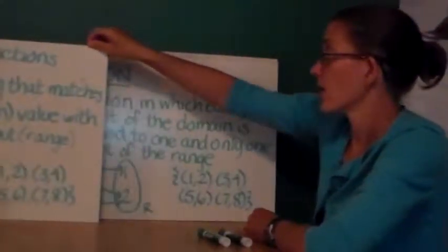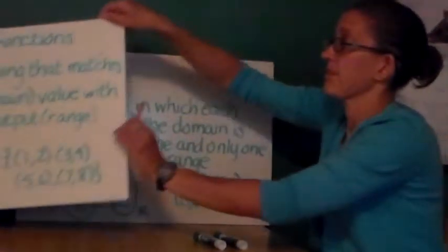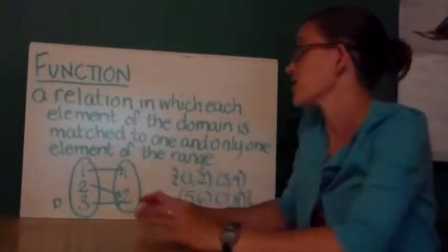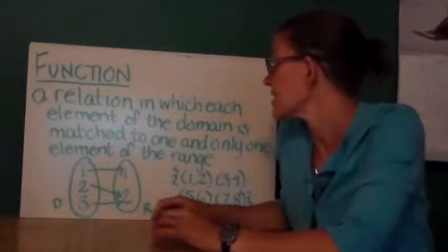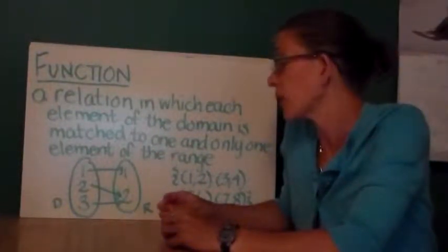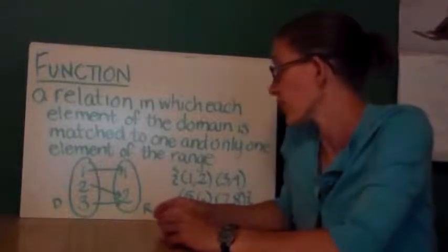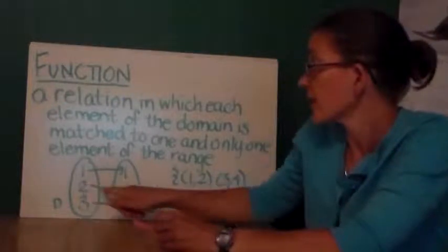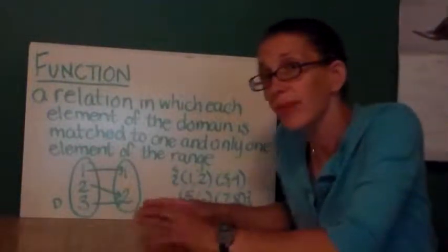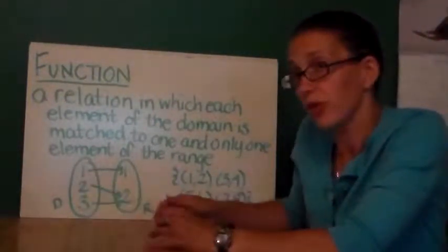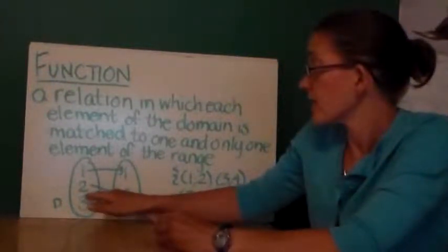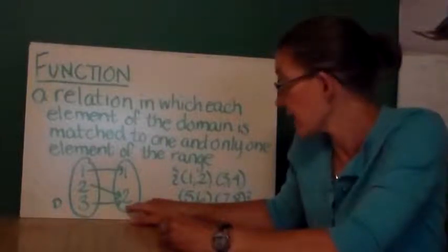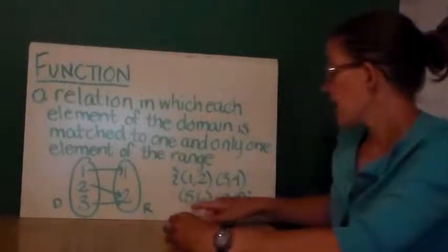Some relations are functions. Now, a function is a relation in which each element of the domain is matched to one and only one element of the range. And I want you to notice there's only one arrow coming out of each of the domain numbers in the first oval, the domain. The numbers 2 and 3 both point at the number 2 in the range, but that's okay.